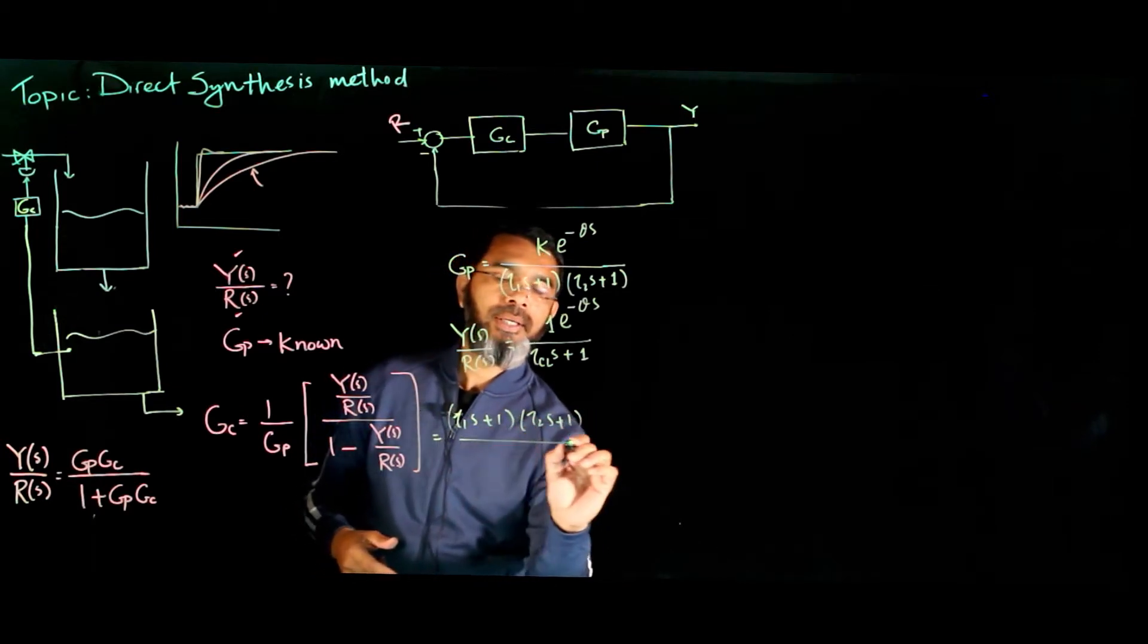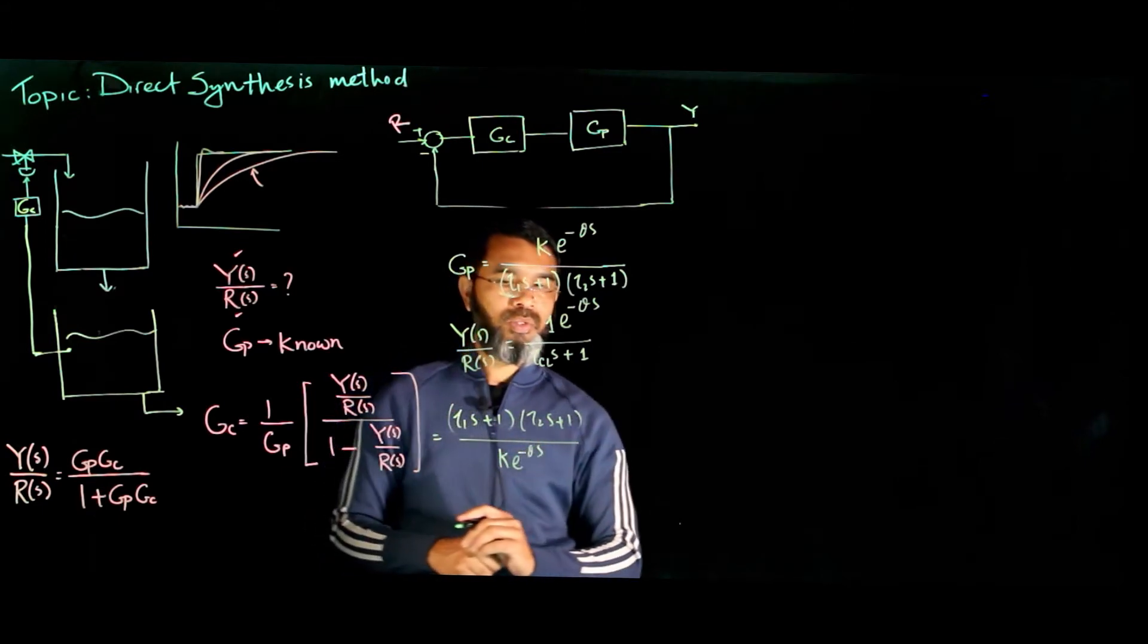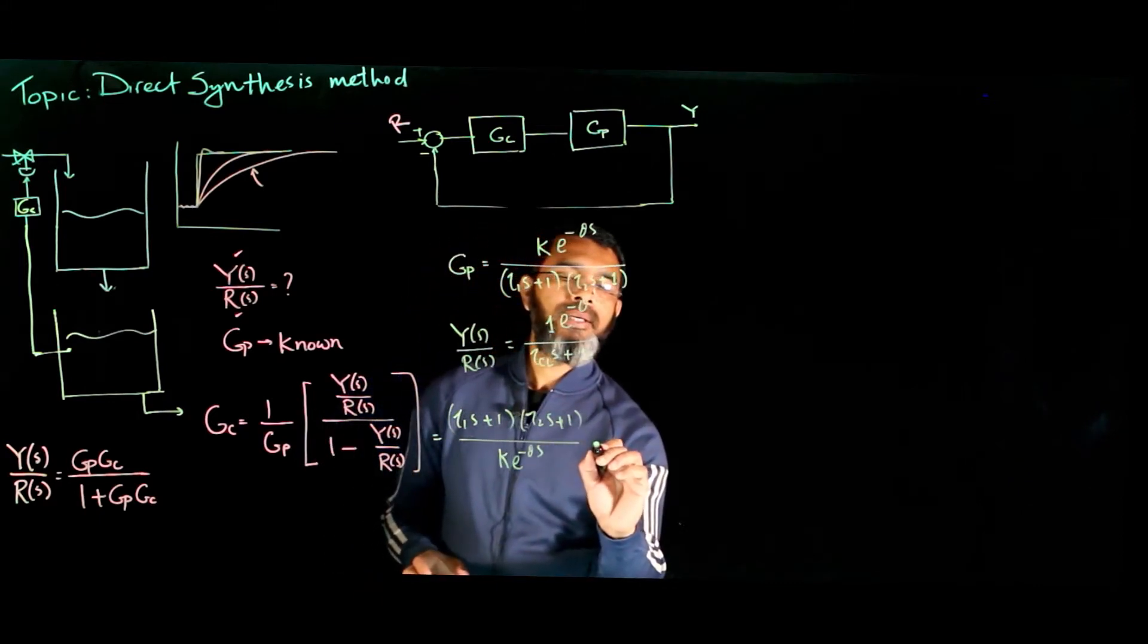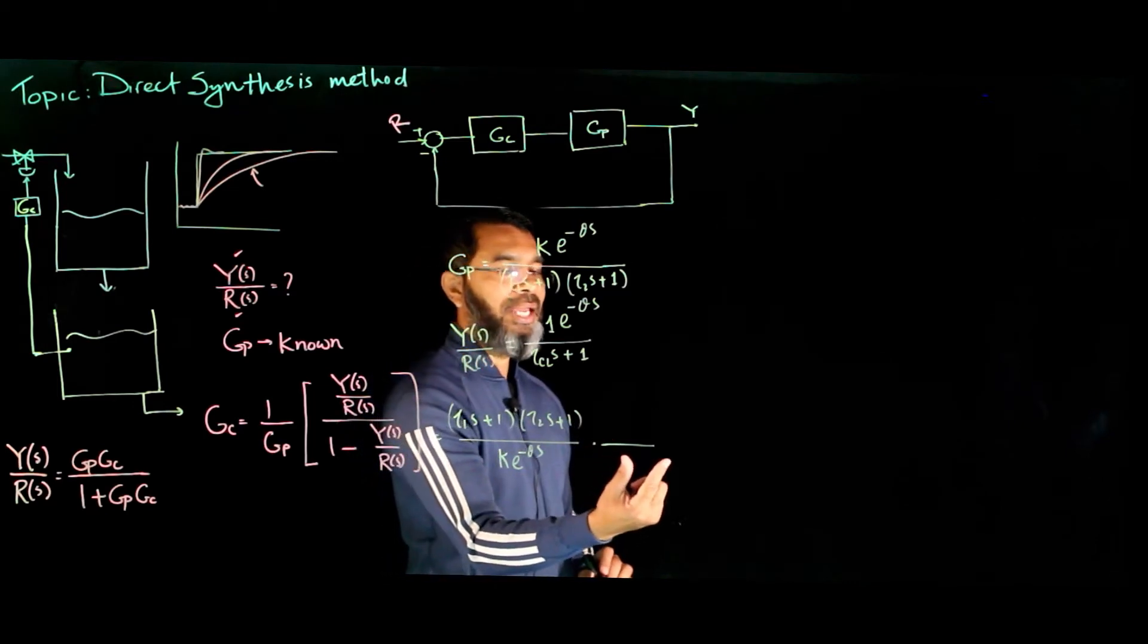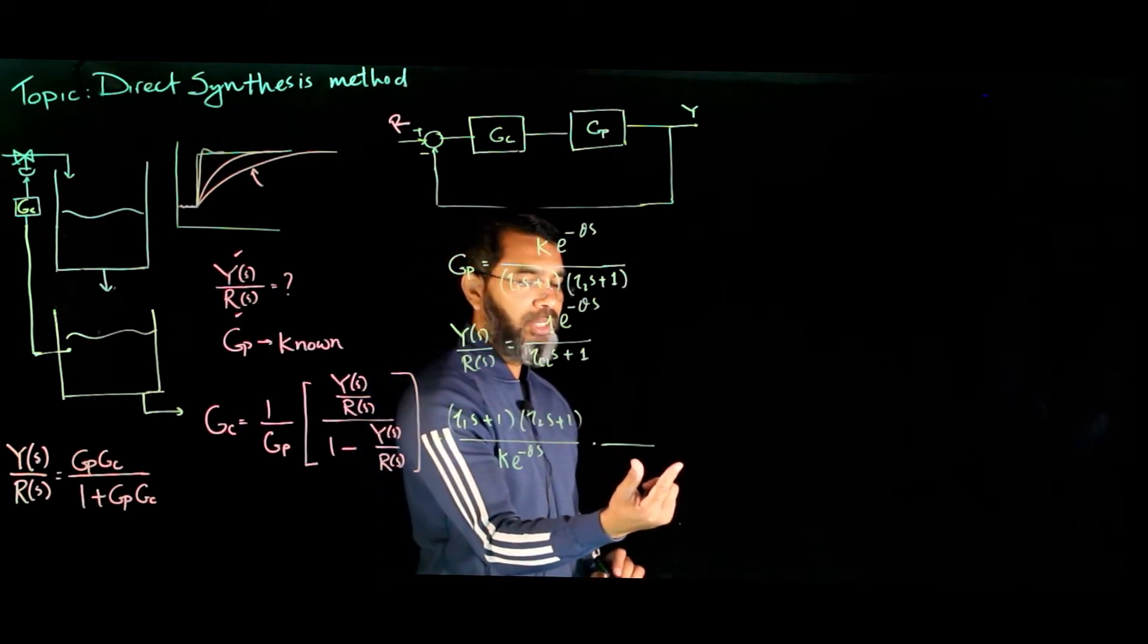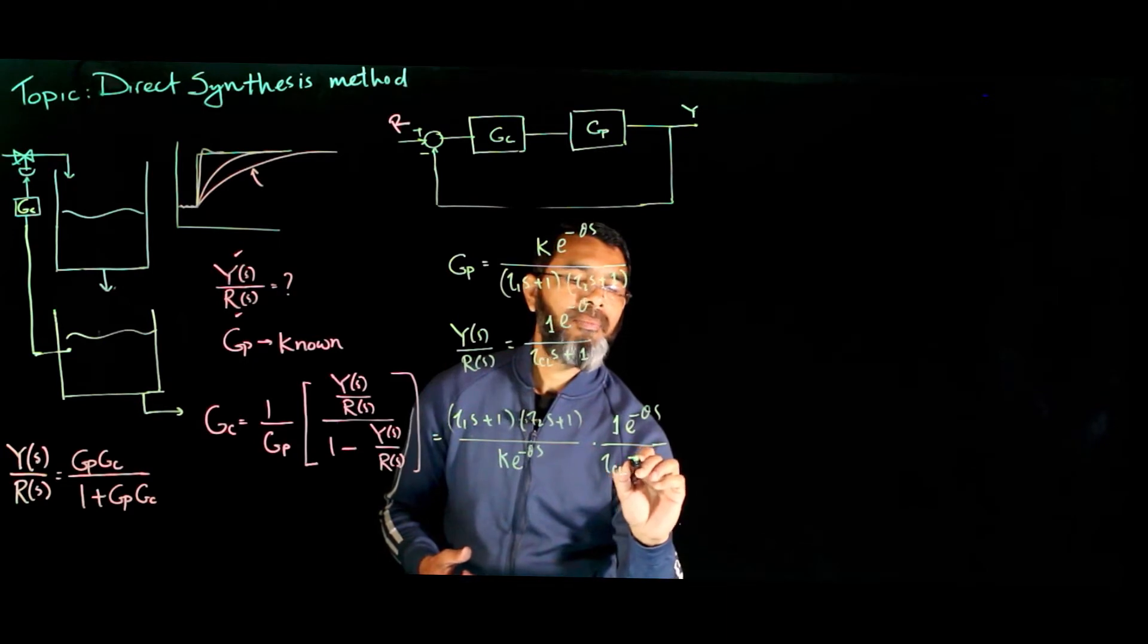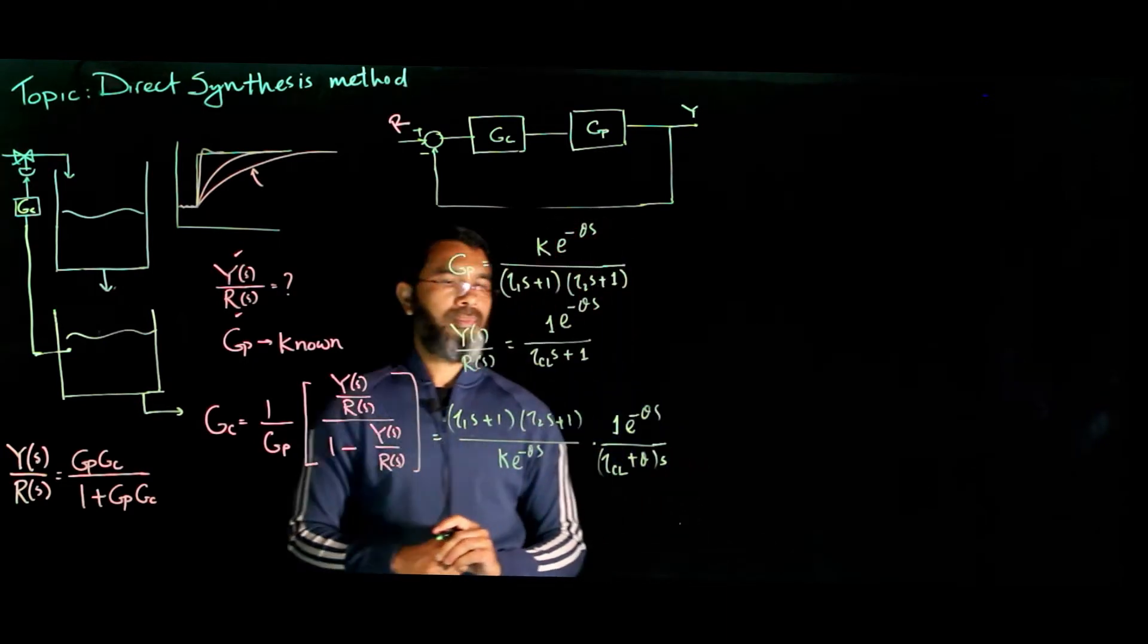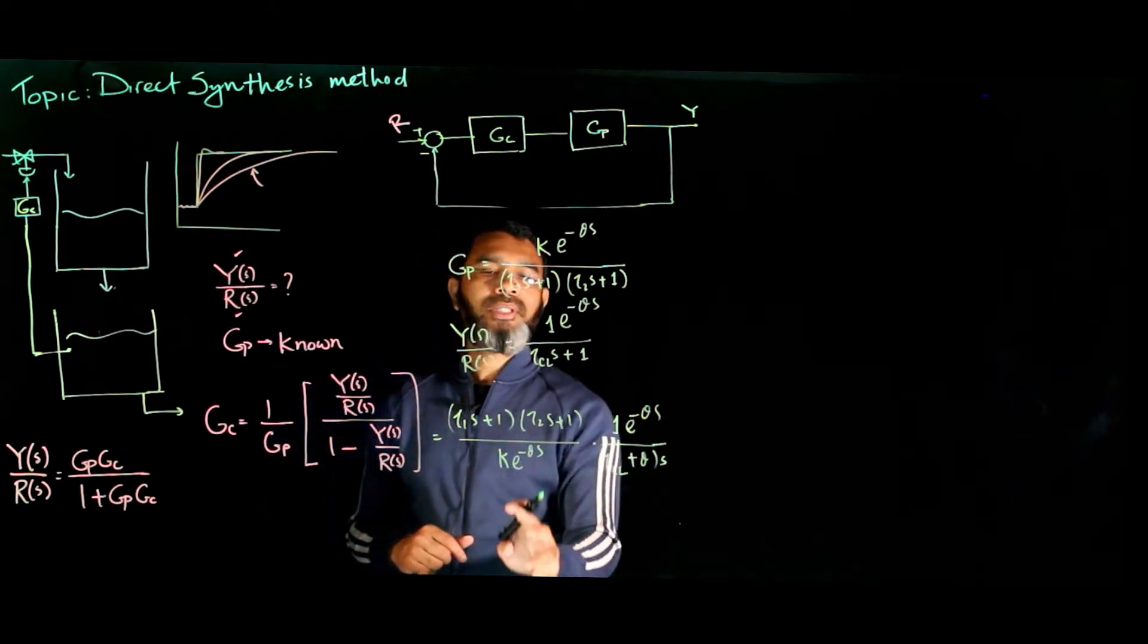And we have seen for this term, by approximating the e to the power negative theta s term in the denominator, we'll get 1 minus theta s over tau cl plus theta s.